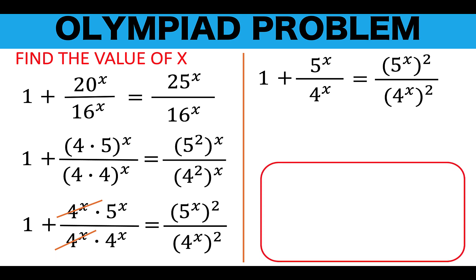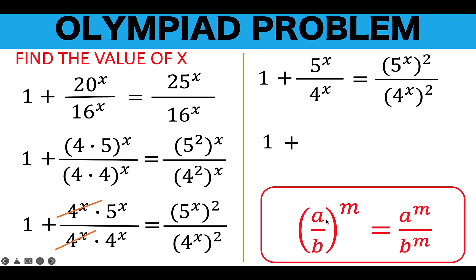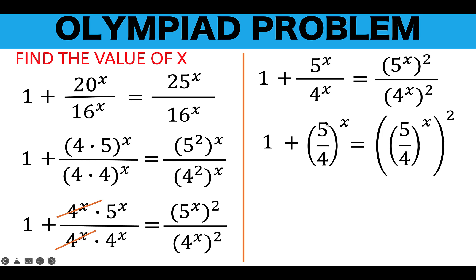We copy the 1, the second term becomes 5 raised to x over 4 raised to x, and we copy the right side. Recalling another law of exponents — a fraction a over b raised to an exponent n equals the numerator raised to n over the denominator raised to n — we use the converse to write 5 raised to x over 4 raised to x as the fraction 5 over 4 all raised to x, both on the left and right sides. Now let the quantity 5 over 4 raised to x be equal to variable r.